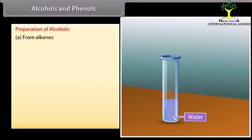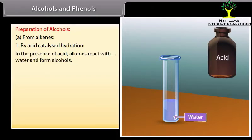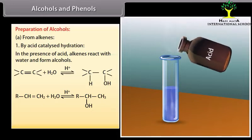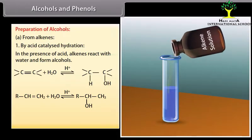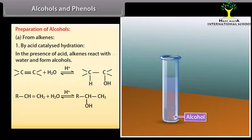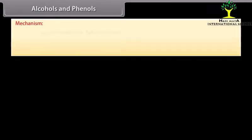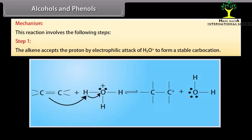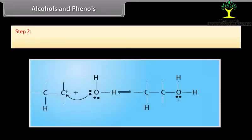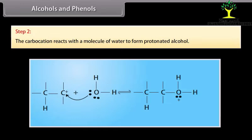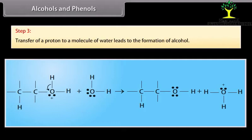Preparation of alcohols from alkenes by acid-catalyzed hydration: in the presence of acid, alkenes react with water to form alcohols. Unsymmetrical alkenes follow Markovnikov's addition. The mechanism involves three steps: Step 1 — the alkene accepts a proton by electrophilic attack of a hydronium ion to form a stable carbocation; Step 2 — the carbocation reacts with a molecule of water to form a protonated alcohol; Step 3 — transfer of a proton to a water molecule leads to the formation of alcohol.